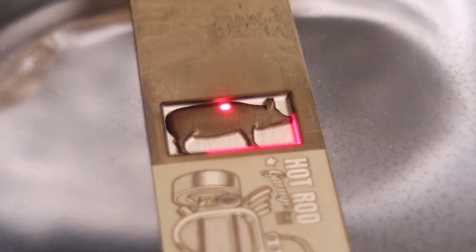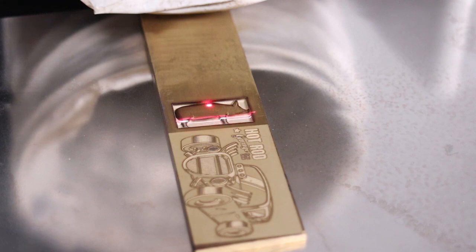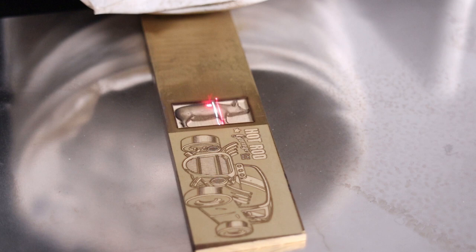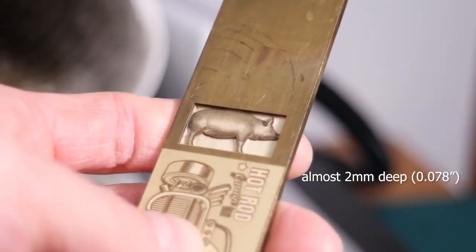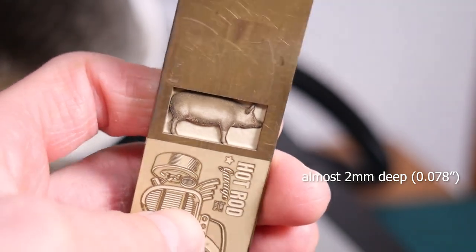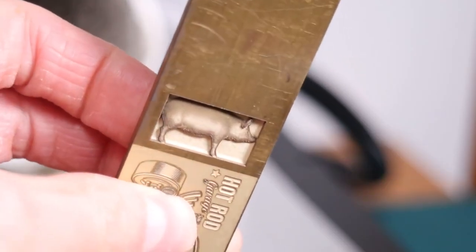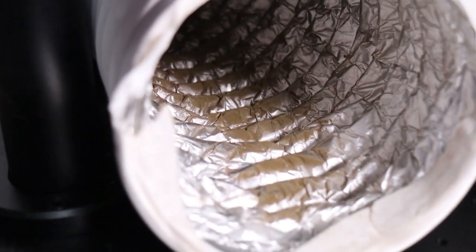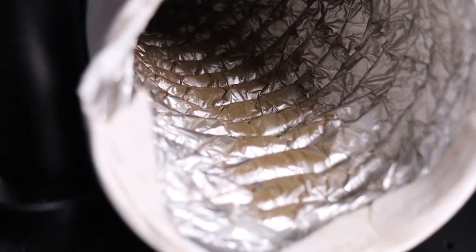After around half an hour, the engraving was done. I manually added an additional cleaning pass across the entire surface. The result looks amazing, and the engraving is much deeper than I thought it would be. Removing this much of material requires good fume extraction and produces a lot of fine dust.